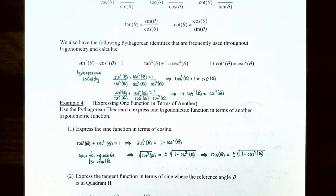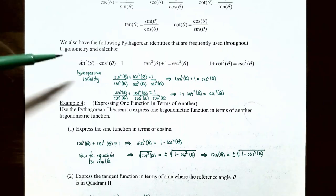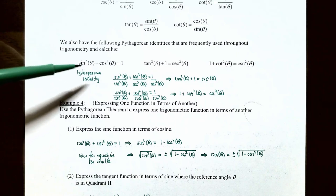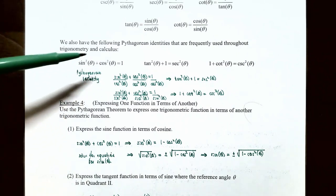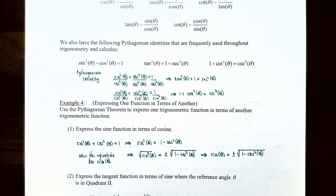We also have the Pythagorean identities, which are frequently used throughout trigonometry and calculus. Sine squared of theta plus cosine squared of the same angle theta must equal 1. This is called a Pythagorean identity.